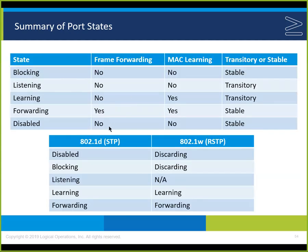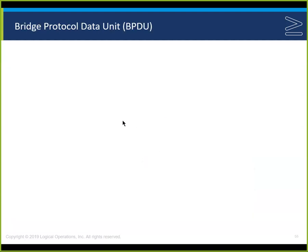Summary of port states: blocking — no frame forwarding, no MAC learning, stable state. Listening — no forwarding, no learning, transitory (15 seconds). Learning — no forwarding, does learn MAC addresses, transitory (15 seconds). Forwarding — forwards frames, learns MAC addresses, stable state. Disabled — shutdown command applied, non-operational, no BPDUs, no forwarding, no learning. In 802.1D terminology: disabled, blocking, listening, learning, forwarding. In 802.1W Rapid: discarding (combining disabled and blocking), then learning, then forwarding — going directly from discarding to learning.